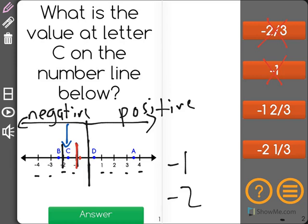And negative 2 and 1 third would be more negative than 2. So that would be like point B, leaving us with our correct answer of negative 1 and 2 thirds. It is in between negative 1 and negative 2, and it looks like, as you can see, it's a little bit closer to negative 2 than it is to negative 1.